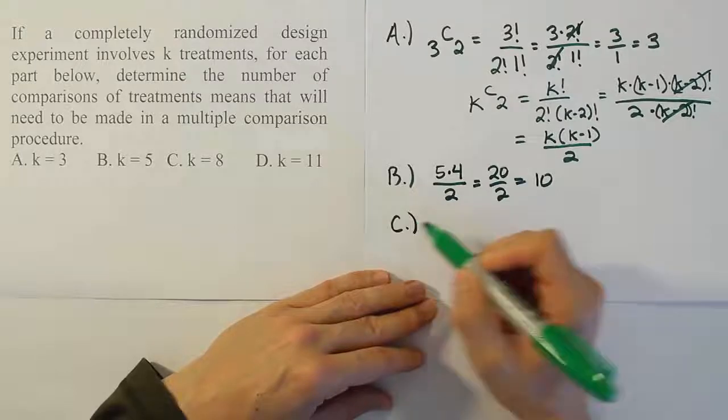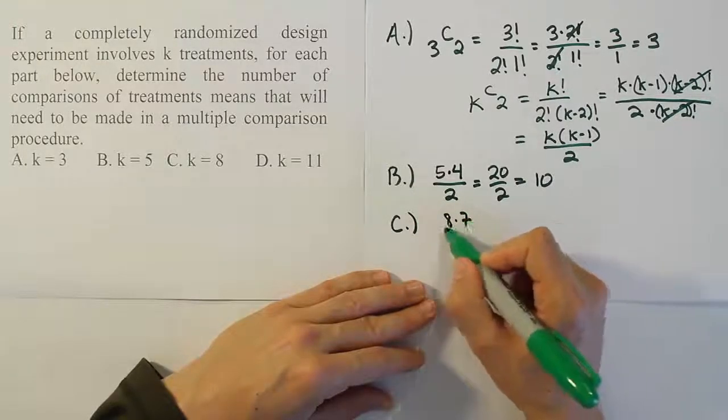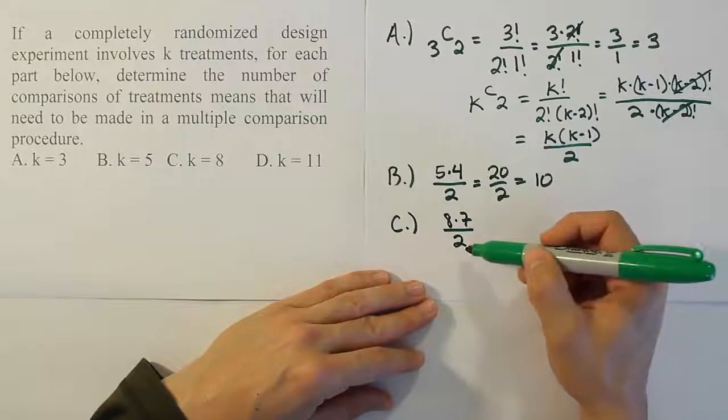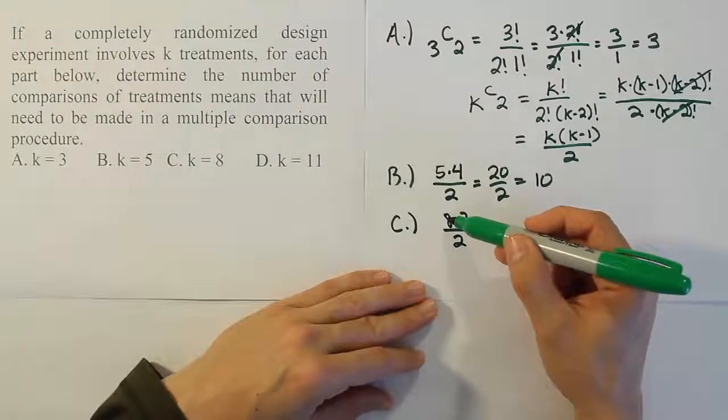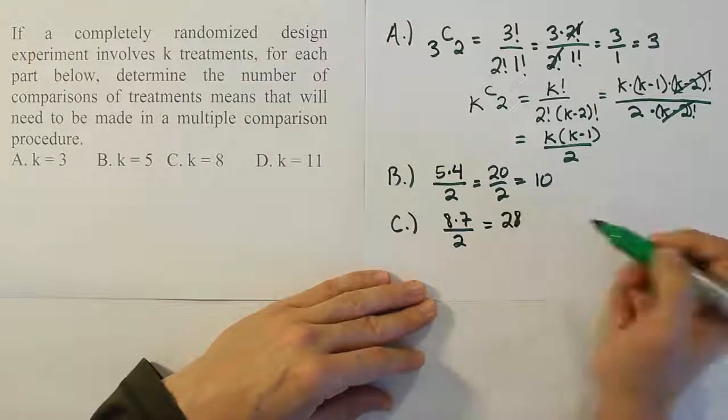In part C, it's the same thing. It'll be 8 times 7 divided by 2. You can also do this: 2 into 8 goes 4, and 4 times 7 gives you 28.